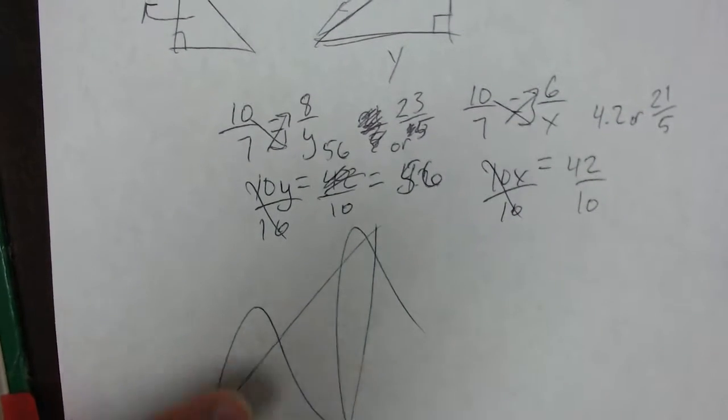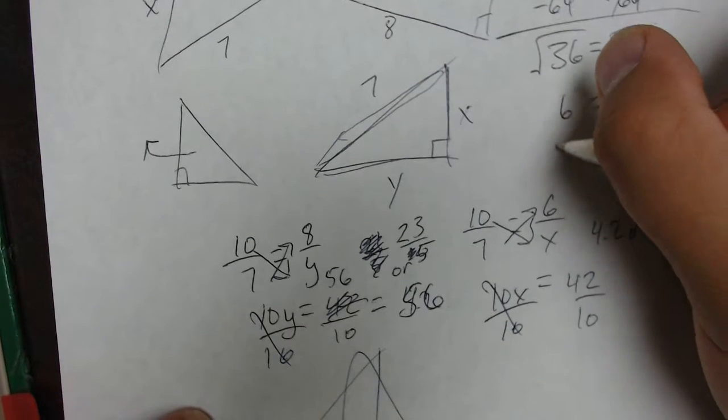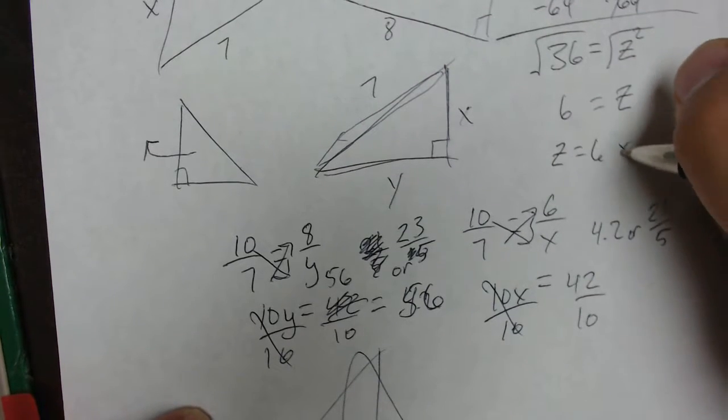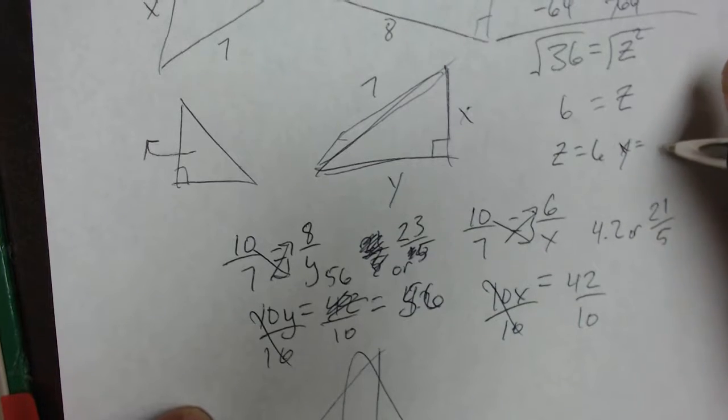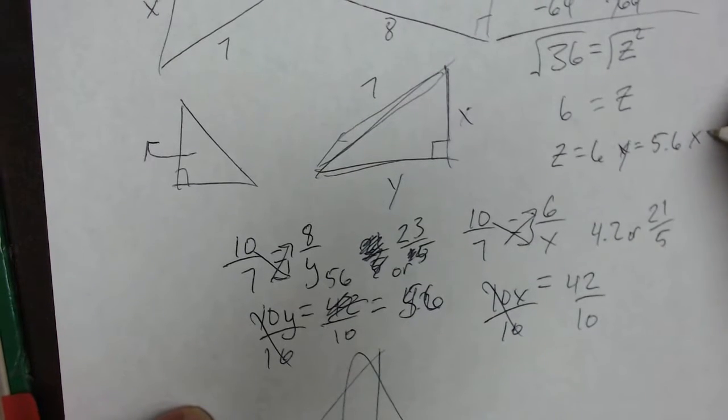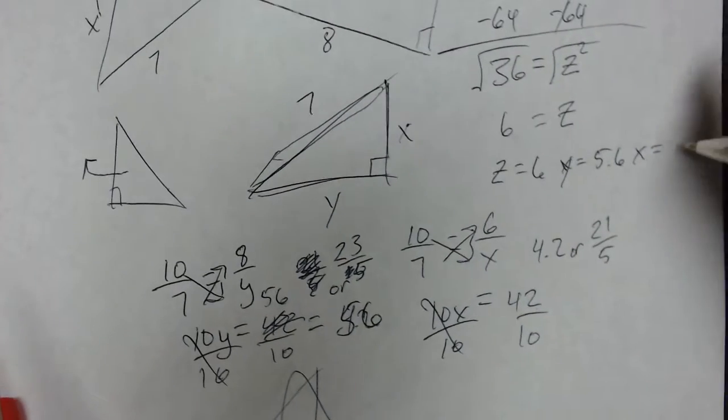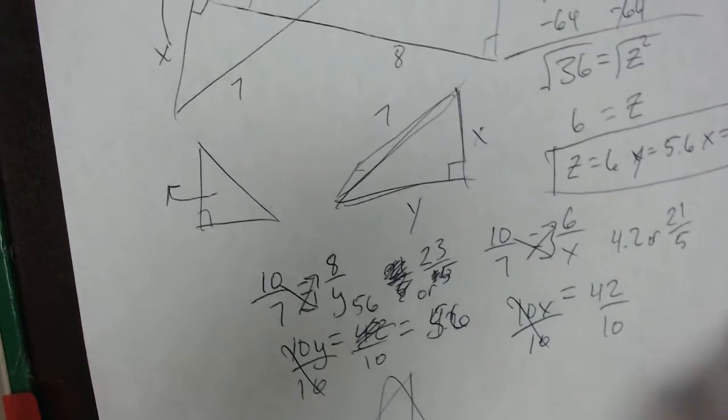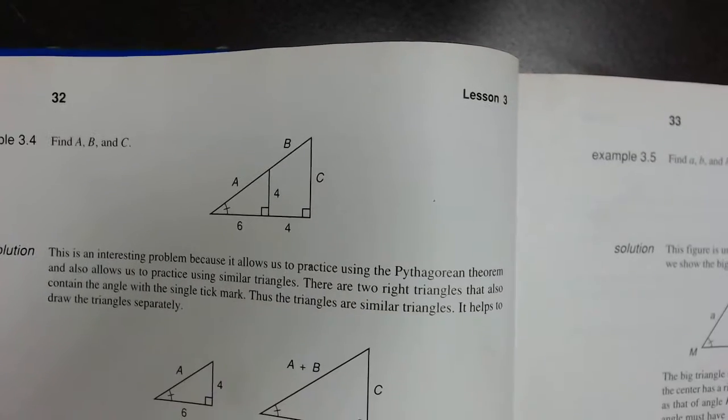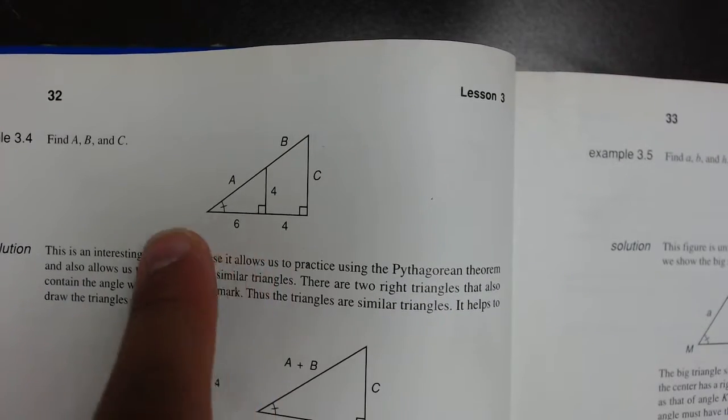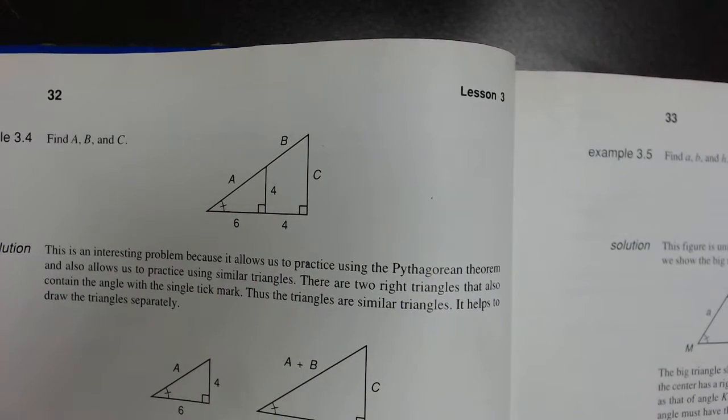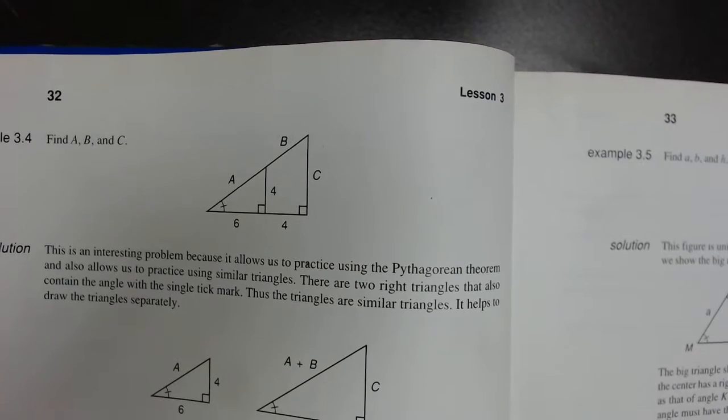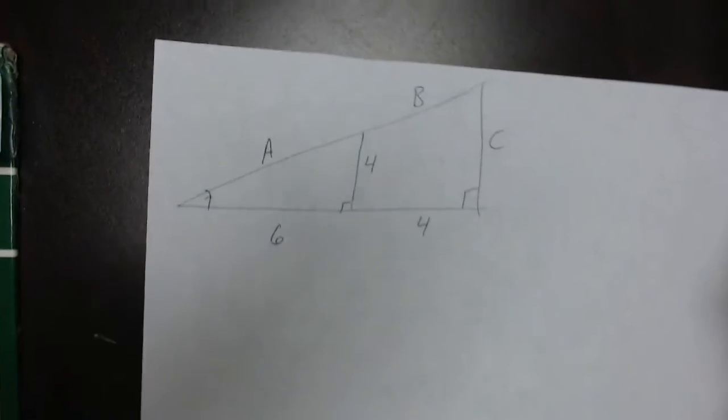For our final answers, we've got Z equals 6, Y equals 5.6 and X equals 4.2. Alright, next example. We're going to be moving on to 3.4. In the book, this is the problem we're presented with. We have two similar right triangles, but one is inside of the other. We need to find A, B, and C. And again, I have so expertly recreated these on my paper.